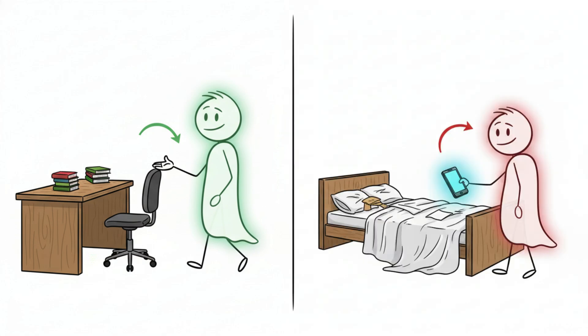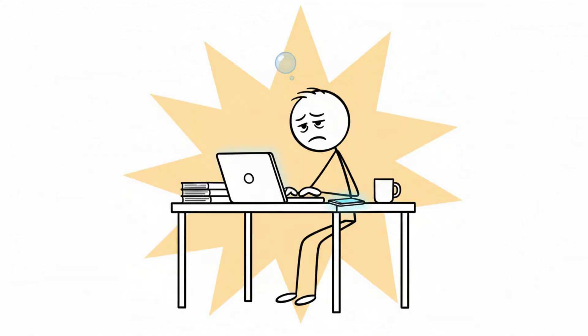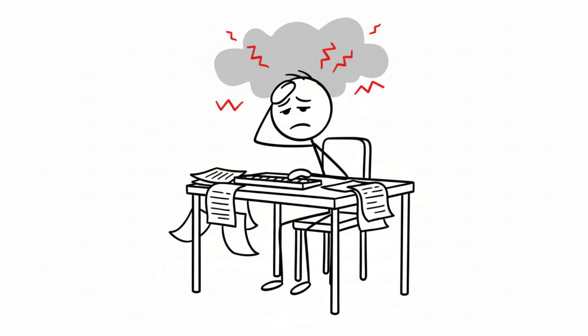The second they wake up, they hop straight onto TikTok, doom scrolling in bed, which as you know by now is a massive dopamine spike. But they then get up and try to go to work or study or do some sort of difficult task which won't release anywhere near as much dopamine.